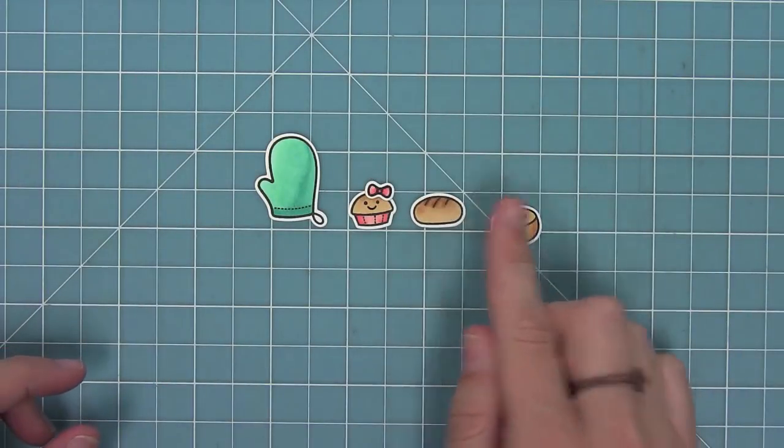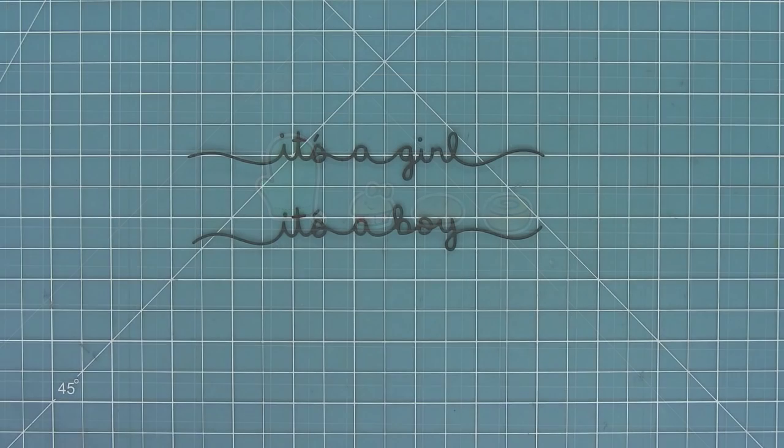We also have some great word border dies that go along with this whole it's a girl, it's a boy theme. I love how delicate these word border dies are. They're so beautiful and it's a great way to do baby showers or gender reveals or birth announcements.